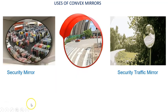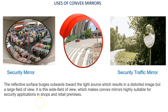Convex mirrors are used as security mirrors in shopping malls and in traffic. The reflective surface bulges outward toward the light source, which results in a distorted image but gives a large field of view and an erect image. This wide field of view makes convex mirrors highly suitable for security applications in shops and retail premises.